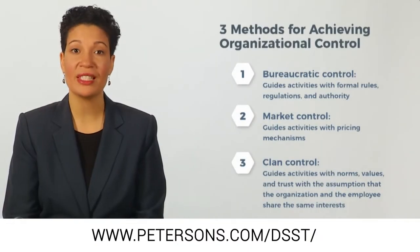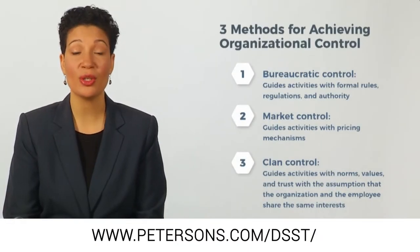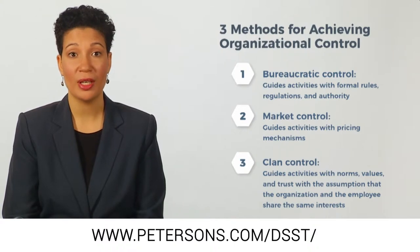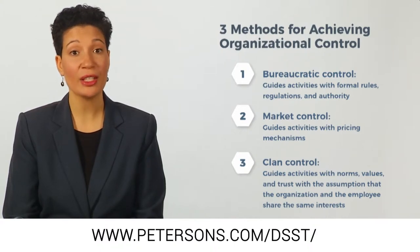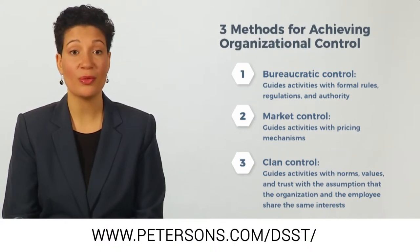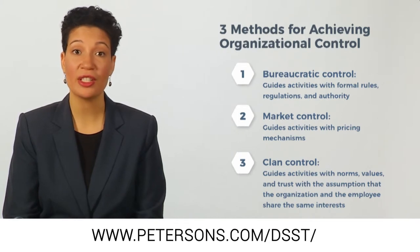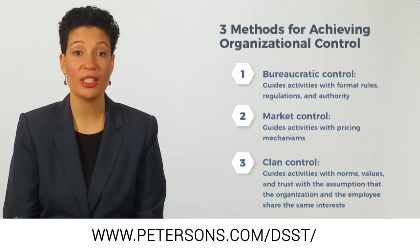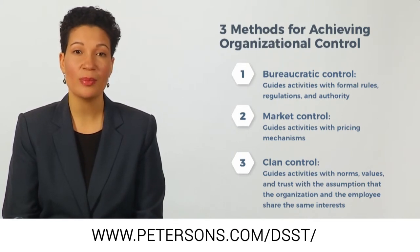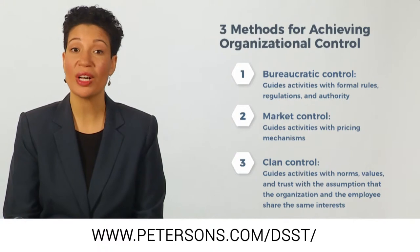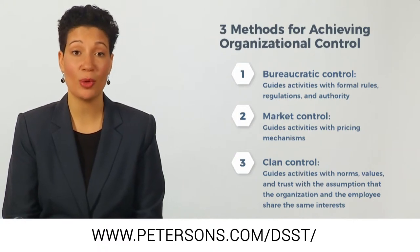Three general methods exist for achieving organizational control. Bureaucratic control guides activities with formal rules, regulations, and authority, such as budgets and performance appraisals. It is best used for well-defined tasks and independent workers.